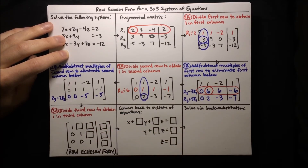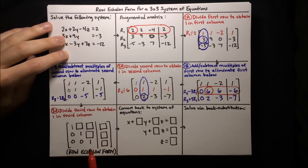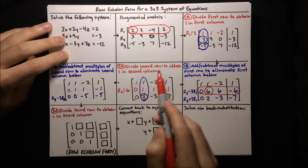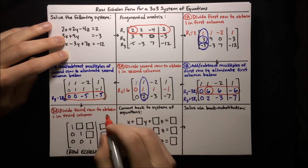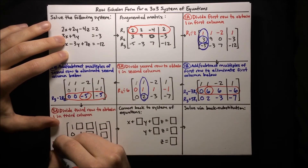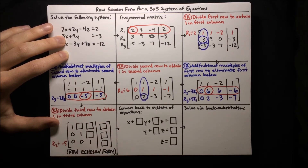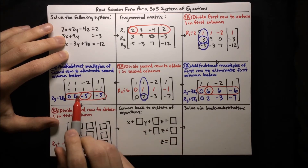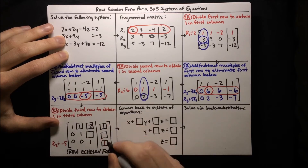Now we're nearly there. All that's missing is the last entry in the diagonal needs to be a 1. We divide row 3 by negative 5, which turns that negative 5 into a 1. So 0 divided by negative 5 is 0, 0 divided by negative 5 is 0, negative 5 divided by negative 5 is 1, and negative 5 divided by negative 5 is also 1. We fill in the rest: first row is 1, 1, negative 2, 1; second row is 0, 1, 1, negative 1.